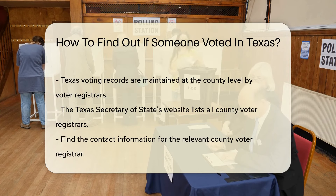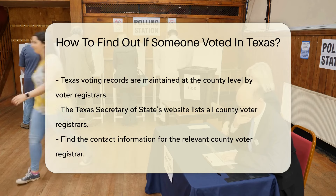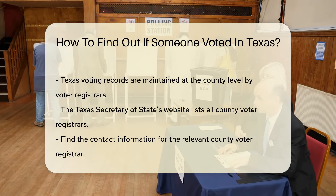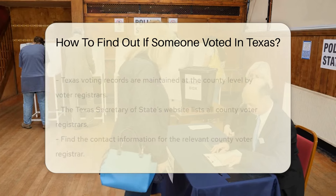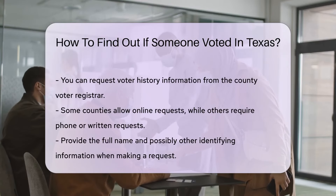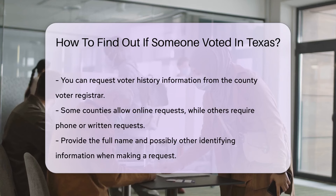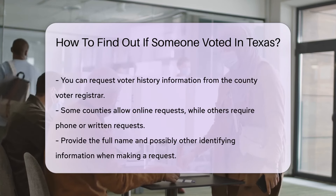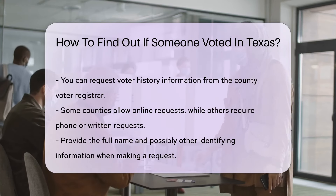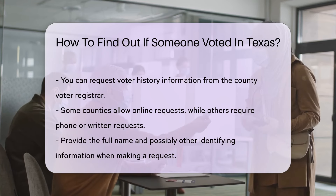Some counties allow you to request this information online. Others may require a phone call or a written request. When making a request, be prepared to provide the full name and possibly other identifying information — this helps ensure you get the correct records. Some counties may charge a small fee for providing voter history records, which covers the cost of processing your request.